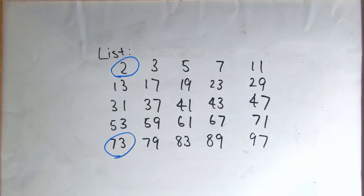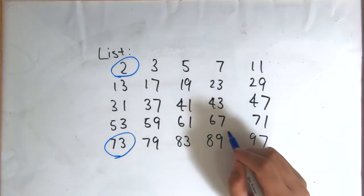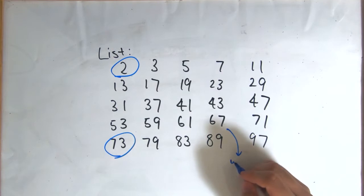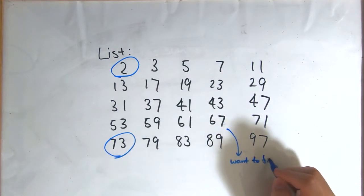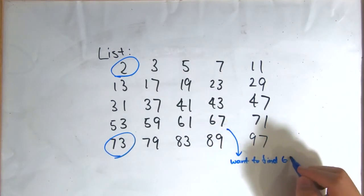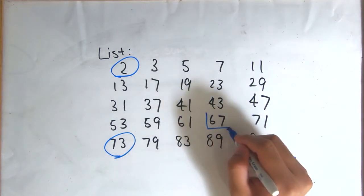Again, a simple approach would require you to look through each of these numbers from the top until you have found or went past the number you were looking for to determine if it's there. Once again, for an extremely large list, this would take too much time. Let's try a different approach this time, only looking at the columns.